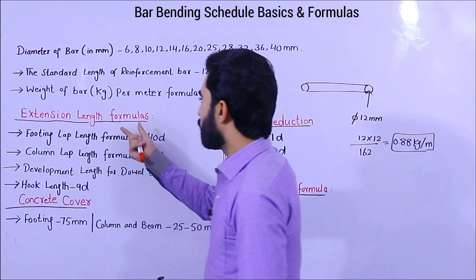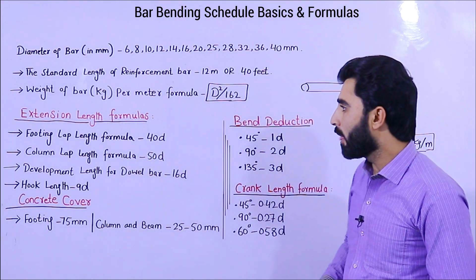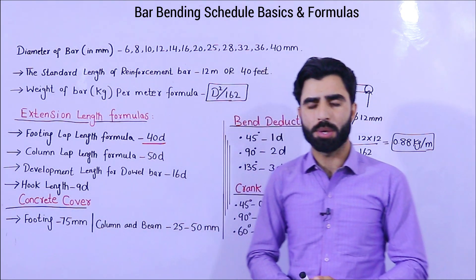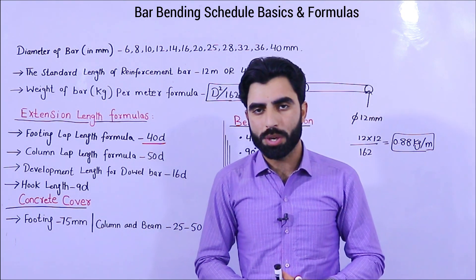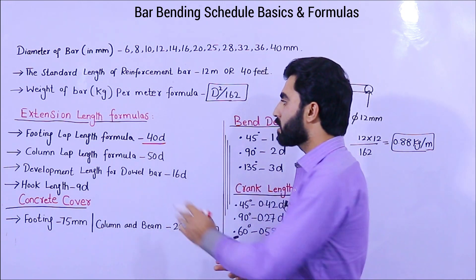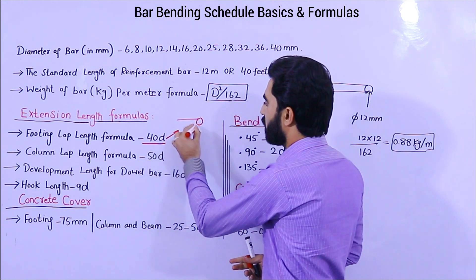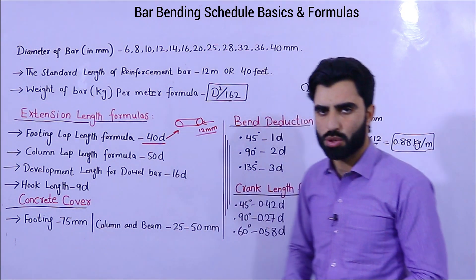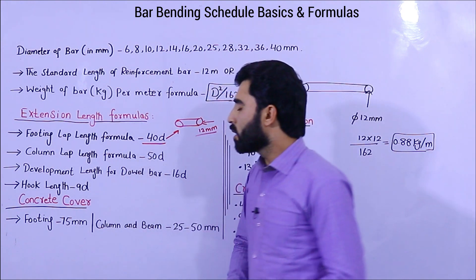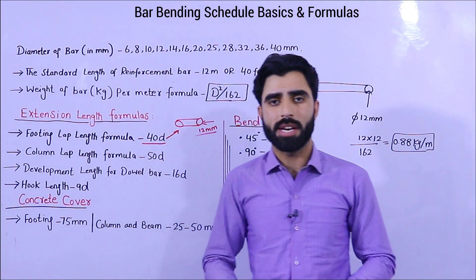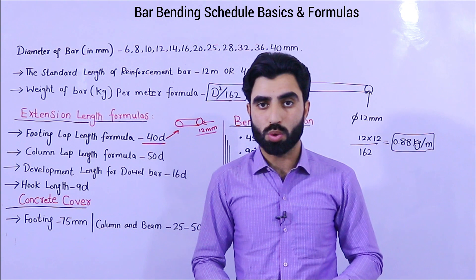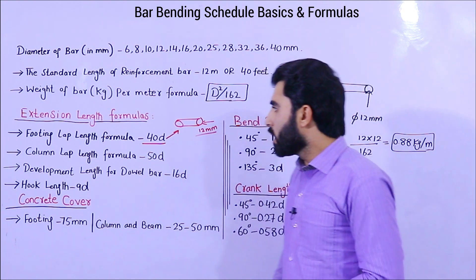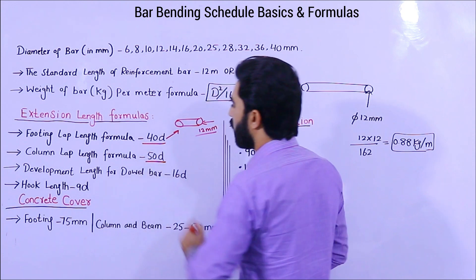Now the extension length formulas especially used in bar bending schedule. First, the footing lap length formula is 40D, where D is the diameter of the steel rod — maybe 12mm, 16mm, etc. The second one is the column lap length formula, which is 50D, where D is again the diameter of the steel rod for the column. These formulas are important because in bar bending schedule we are finding total weight, length, and different shapes.